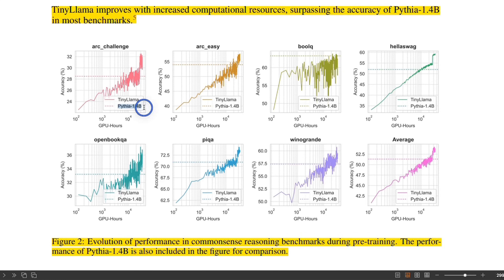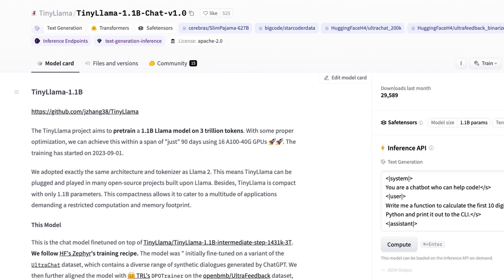But for similarly sized models such as Pythia 1.4B, the performance plateaus even if you train for longer. This is potentially an indicator that they could have trained the model for longer and gotten better performance on these benchmarks. Now, the question is: is this model any good?